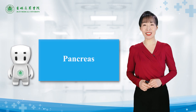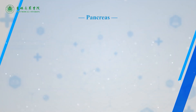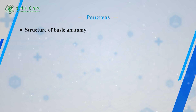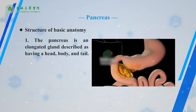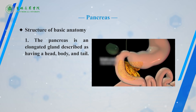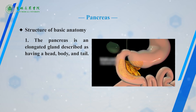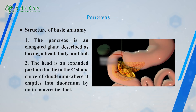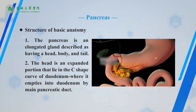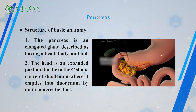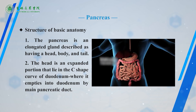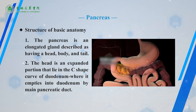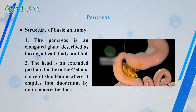Let's study the pancreas. The pancreas is an elongated gland, described as having a head, body, and a tail. The head is an expanded portion that lies in the C-shaped curve of the duodenum, where it empties into the duodenum by the main pancreatic duct.